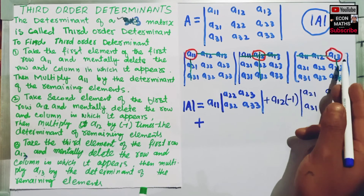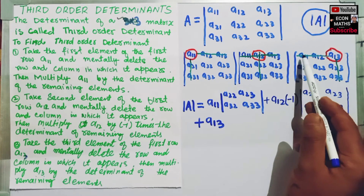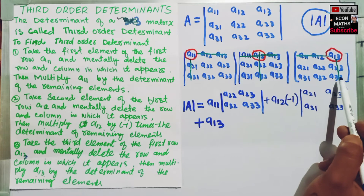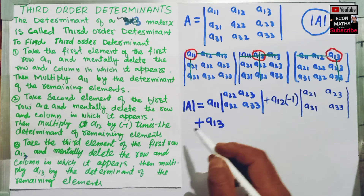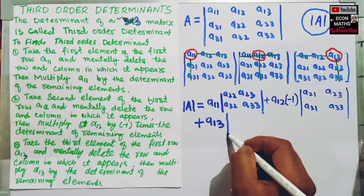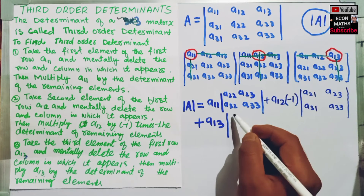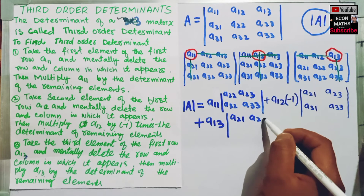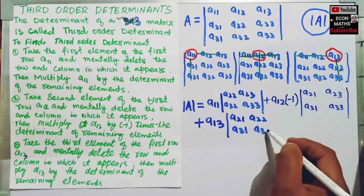We take this element A13 and mentally delete the row and the column in which it appears. Then we multiply this element by the determinant of the remaining elements, that is A21, A22, A31, and A32.